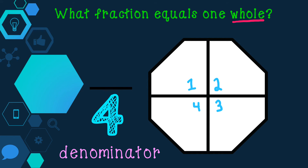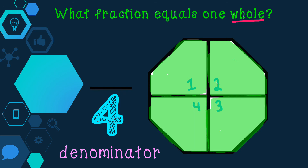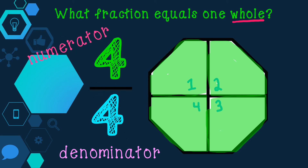Next, I'm going to shade or color in the parts until I have shaded 1 whole. If I shade one part, did I color in the whole or all of the shape? No, I didn't. So I'm going to keep shading and counting: 1, 2, 3, 4. I had to shade 4 parts to cover the entire or the whole shape. So the number 4 is the numerator, because it represents the number of parts I shaded. If you look at the numerator and denominator, the numbers are the same. When this happens, I know that I have 1 whole.